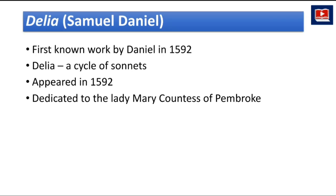The next one is 'Delia,' written by Samuel Daniel. It is his first known work, published in 1592. 'Delia' is a cycle of sonnets that appeared in 1592 and was dedicated to the Lady Mary, Countess of Pembroke.